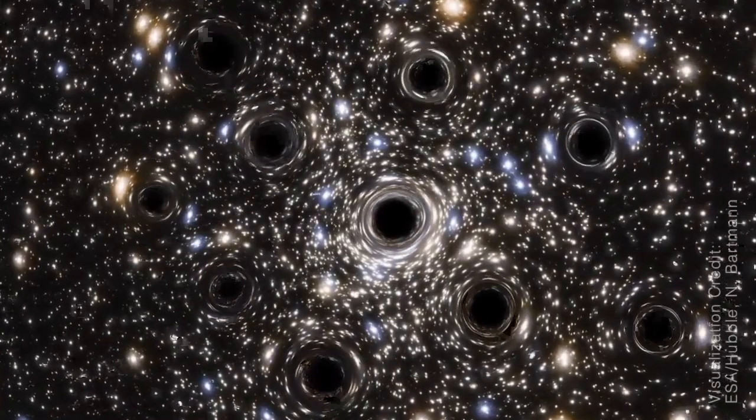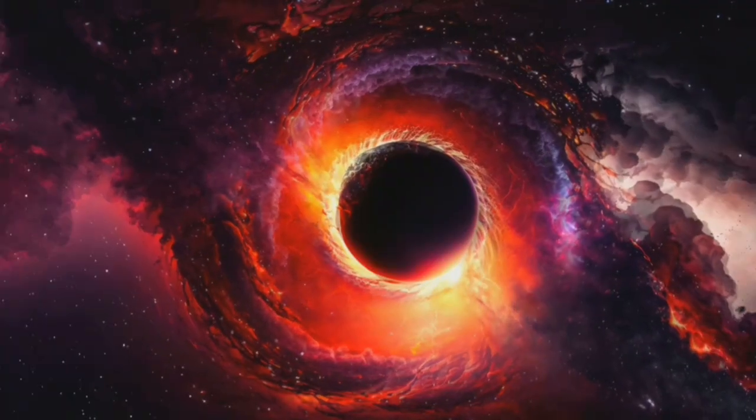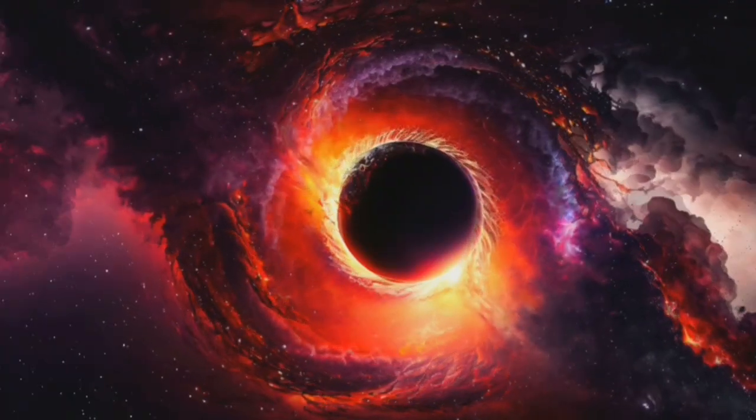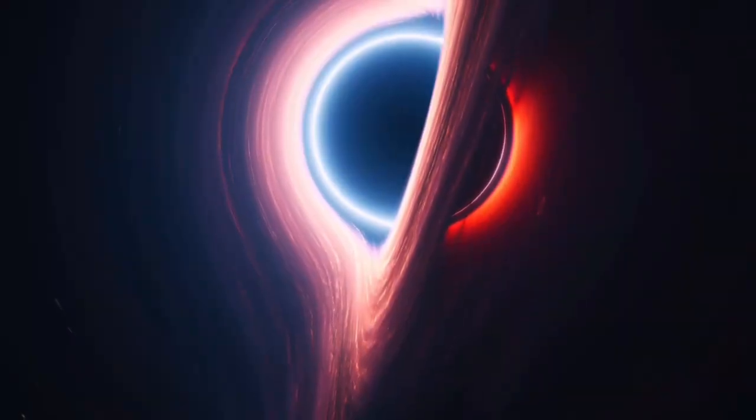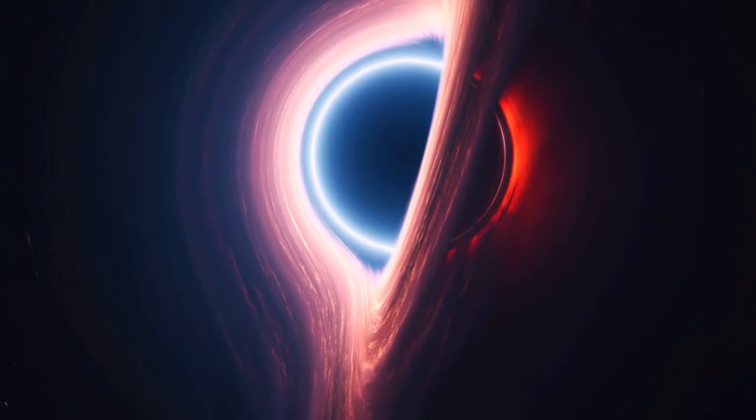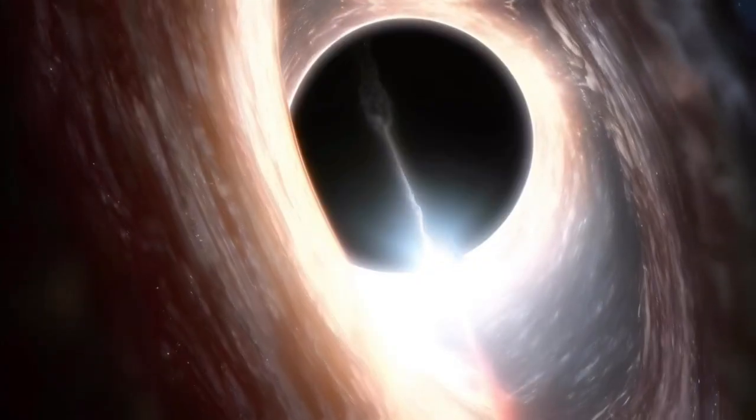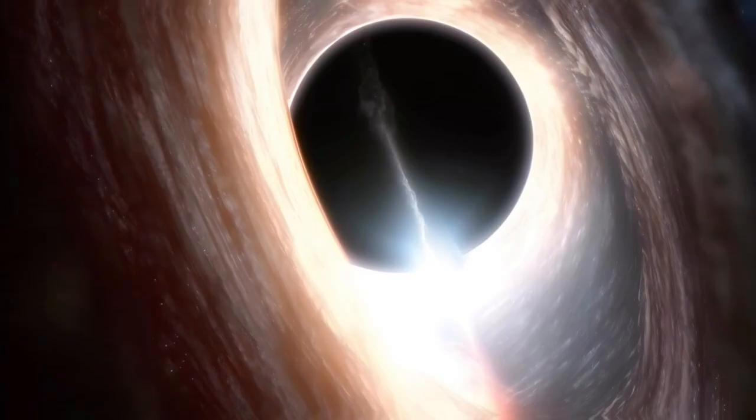Cygnus X-1, located about 6,000 light-years from Earth, has staggering properties. It is incredibly dense and exerts a gravitational force so intense that not even light can escape its grasp. This defining feature earned it the name black hole, encapsulating the essence of these mysterious objects.